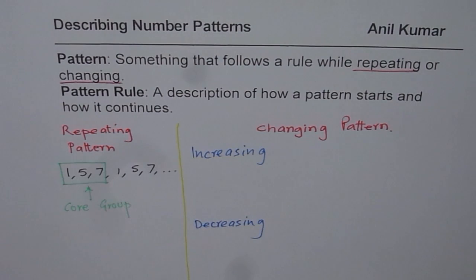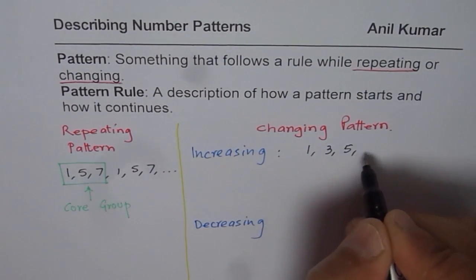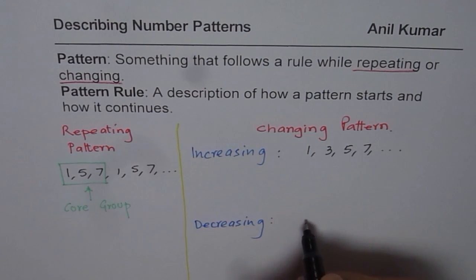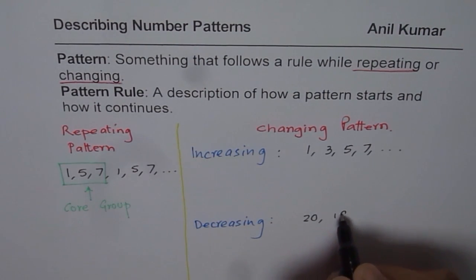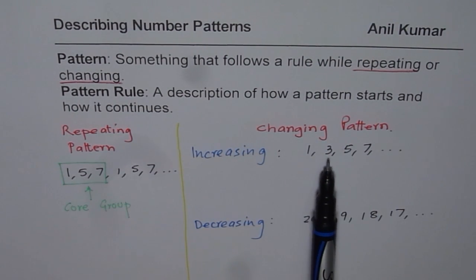Because they are changing they could increase or they could decrease. So we have increasing and decreasing patterns. You can actually pause the video and give examples of increasing and decreasing patterns. Let me write down one for you. Increasing pattern could be, let's say, 1, 3, 5, 7 and so on.